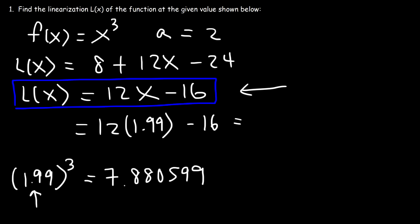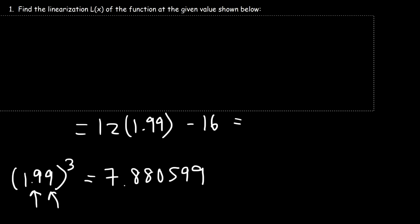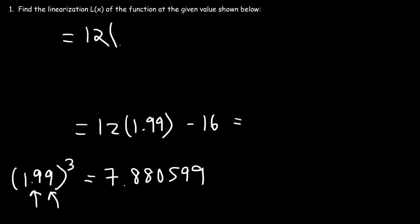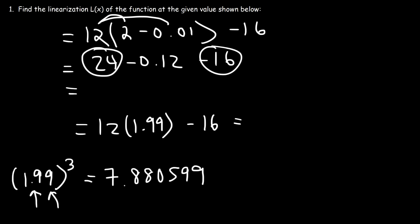Now, let's see if we can do this without a calculator, because if we have access to a calculator, we could simply type this in. So what is 12 times 1.99 without a calculator? 1.99 is 2 minus 0.01. And so 12 times 2 is 24. And 12 times 0.01 is 0.12. Now, 24 minus 16 is 8. And 8 minus 0.12 is 7.88. Because 100 minus 12 is 88.